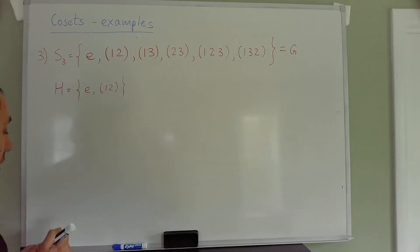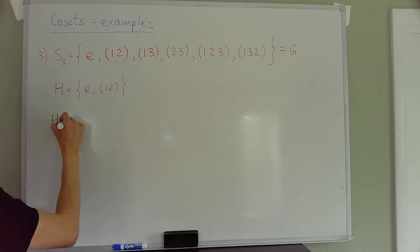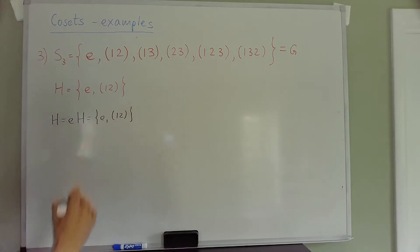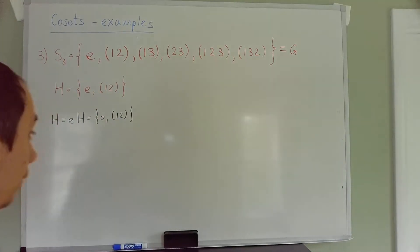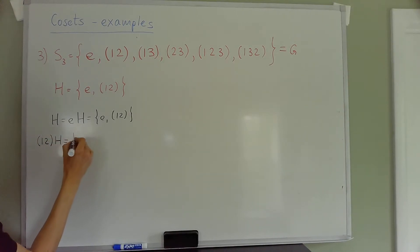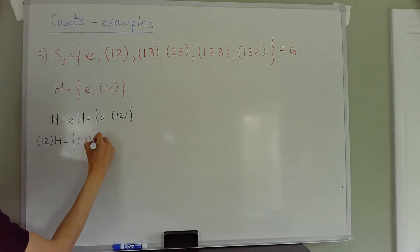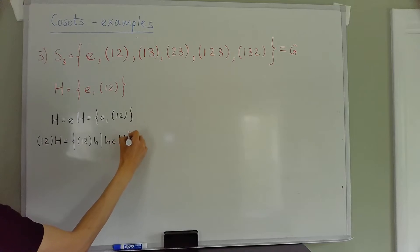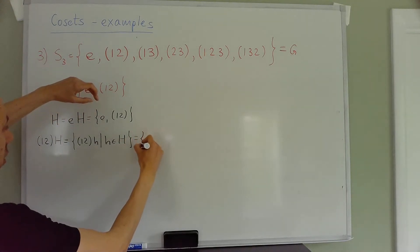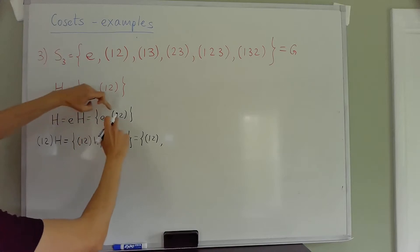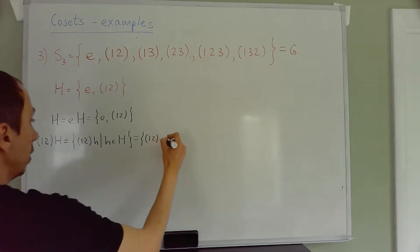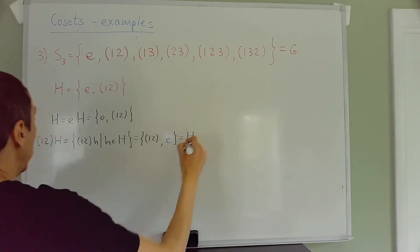Let's look at the left cosets. One coset is eH = H = {e, (1 2)}. Next, let's try g = (1 2). Then (1 2)H gives (1 2)·e = (1 2) and (1 2)·(1 2) = e, since (1 2) has order 2. So we get H again — no new coset.